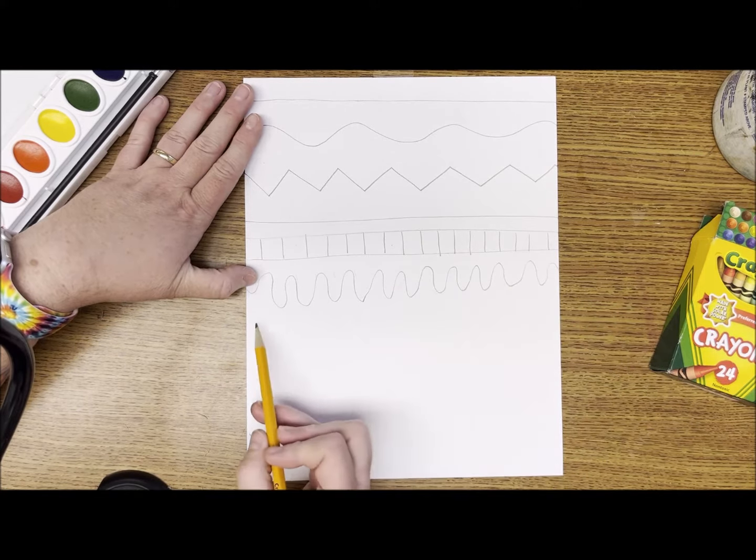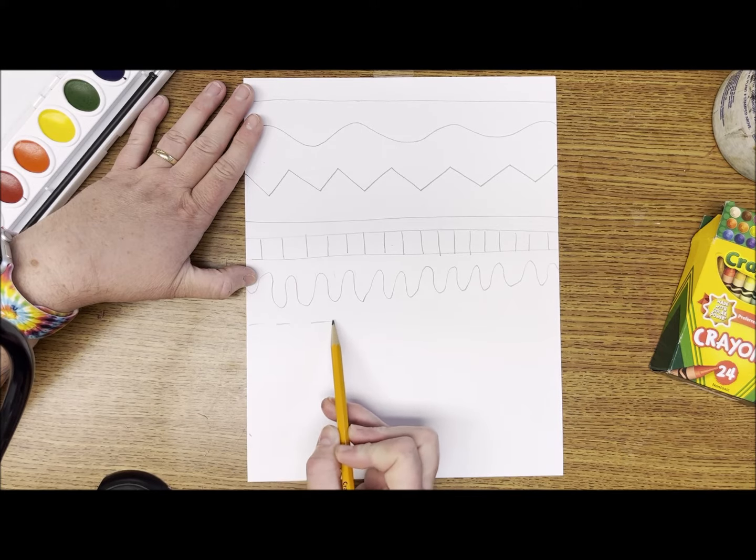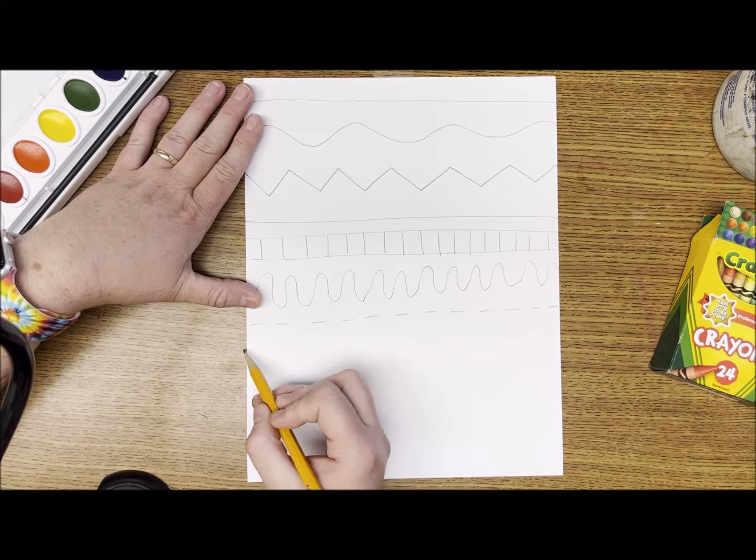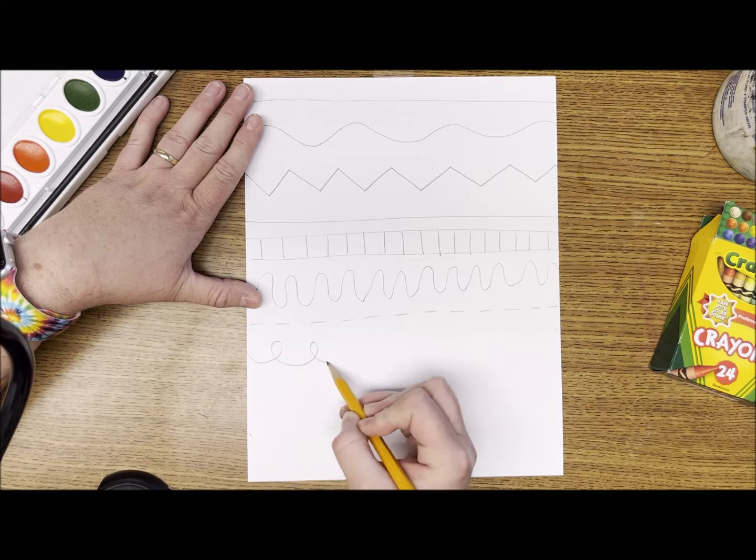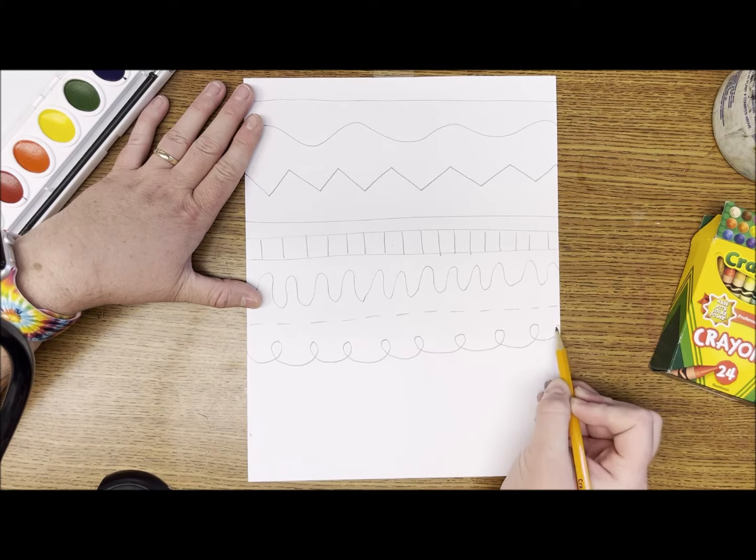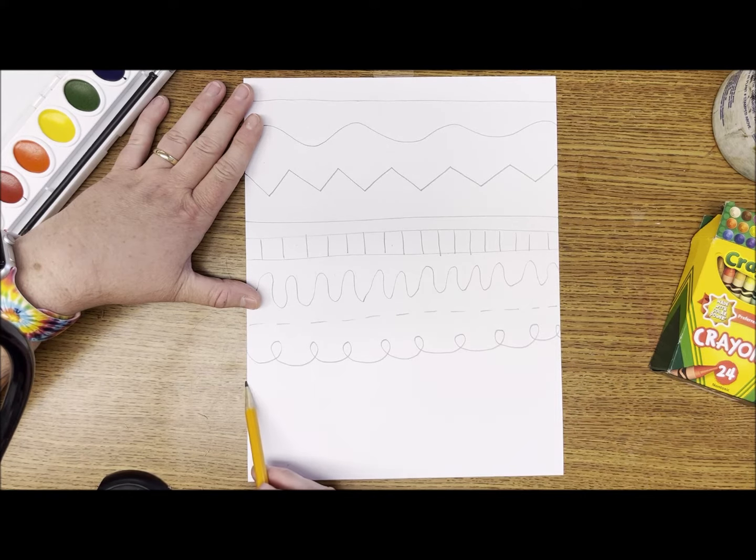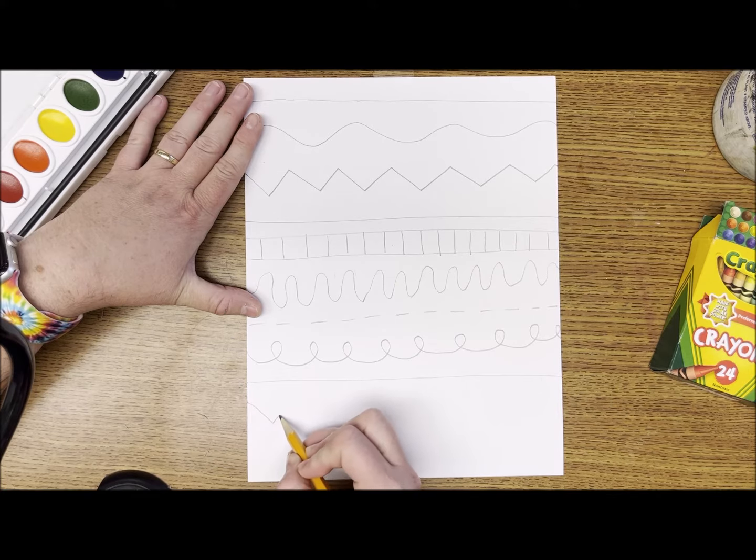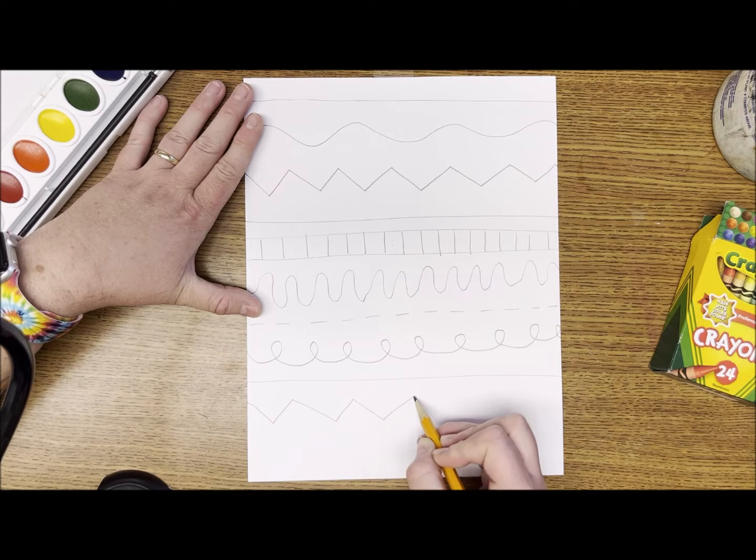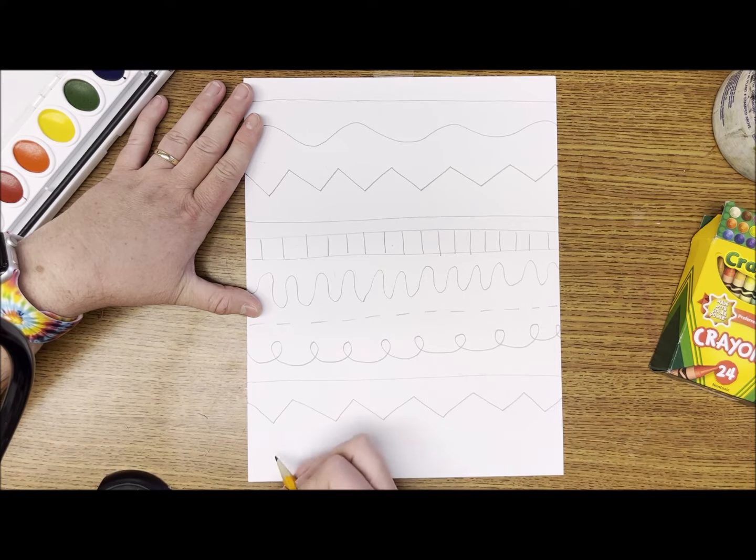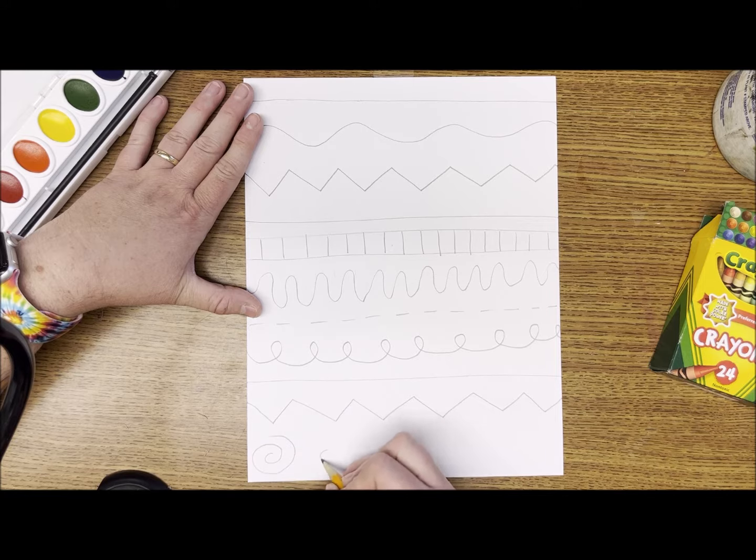And the opposite of short is a long line. We'll make this one long and curvy. Next we have a dashed line, and finally a looped line. Now those are the nine types of lines. I still have room so I'm going to repeat a few and add some more fun line designs to the bottom. For my last one I'll do a spiral line.